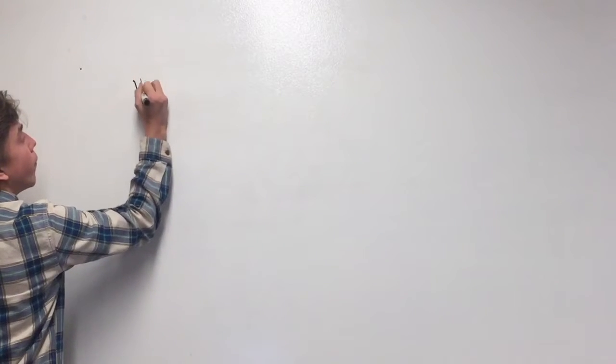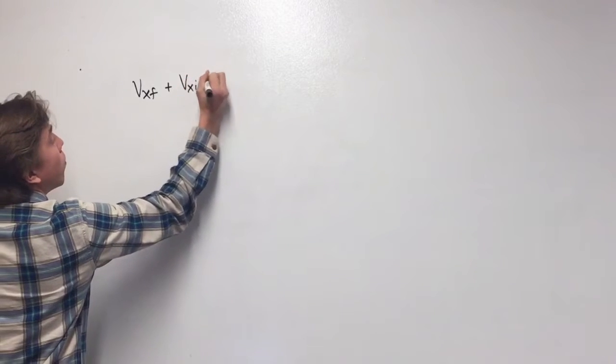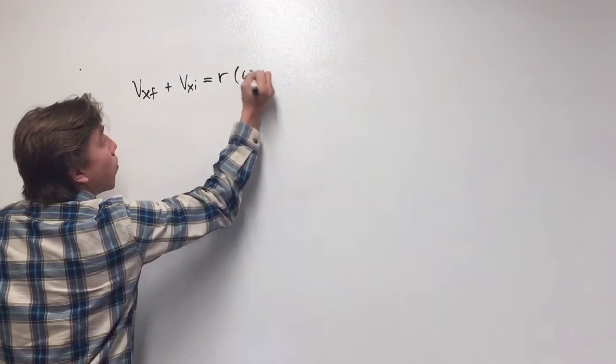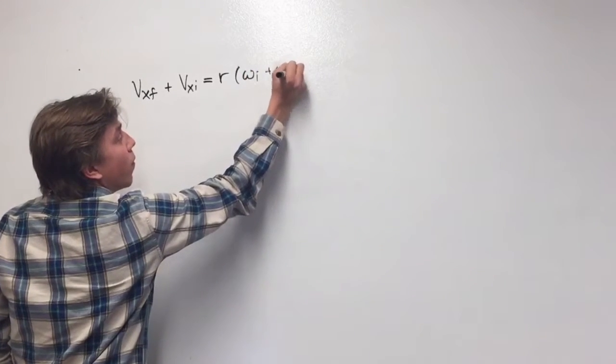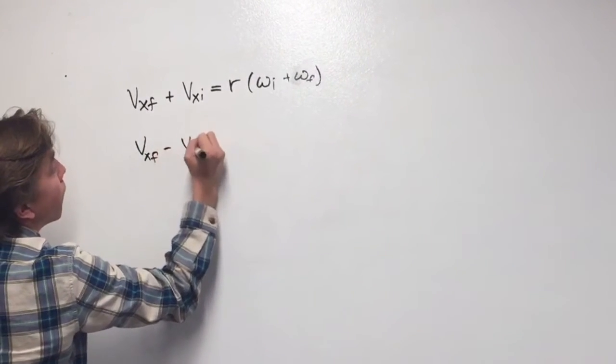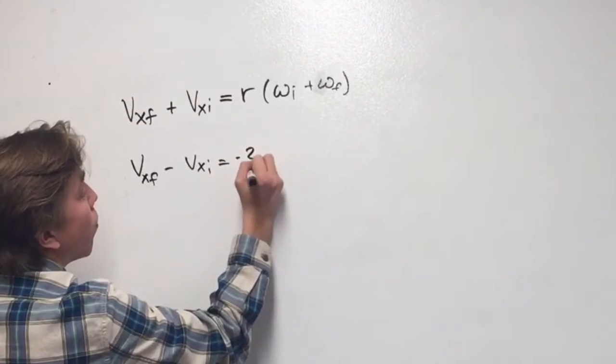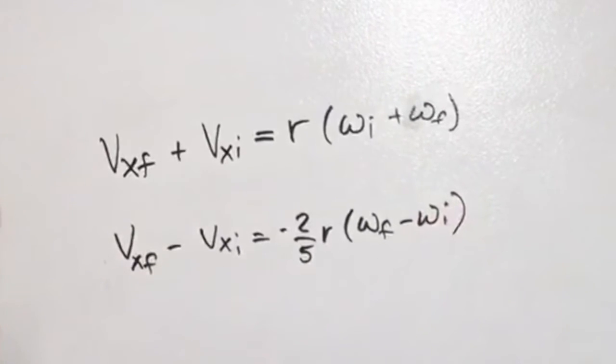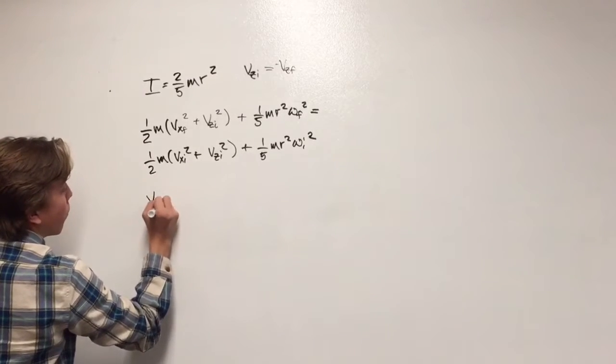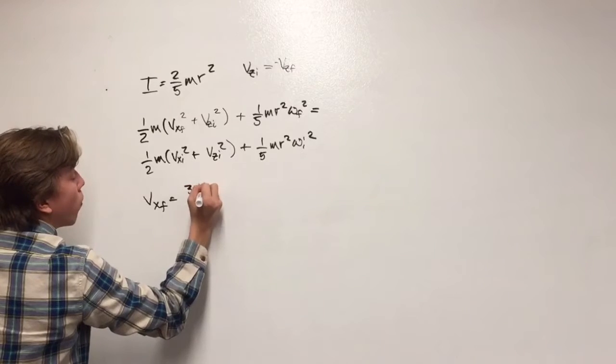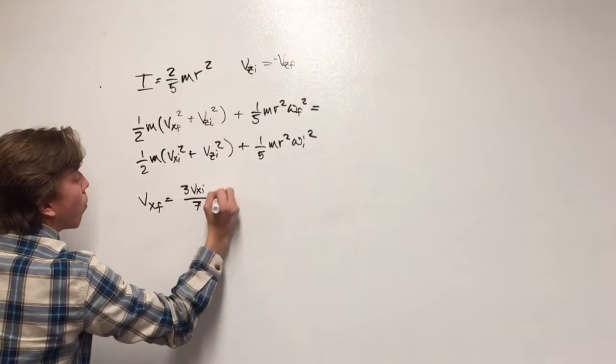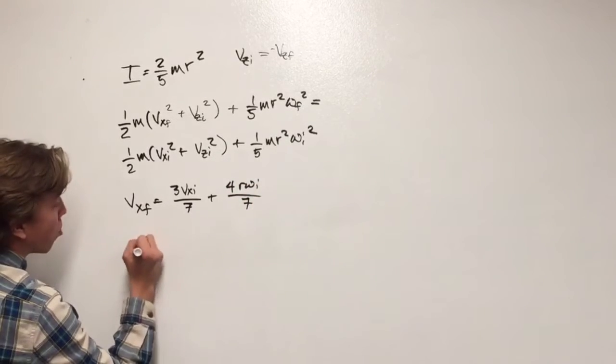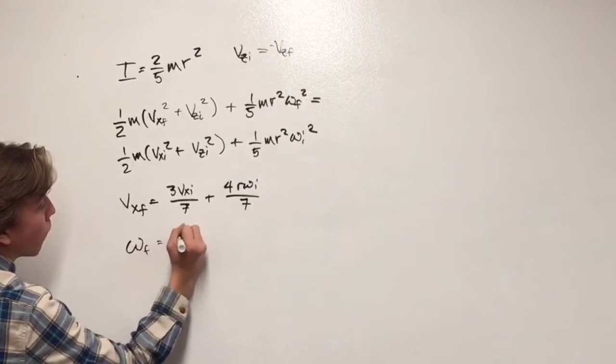First, we have the final vx plus initial vx equals r times the final omega plus the initial omega, where omega is angular velocity. Second, we have final vx minus initial vx equals negative two-fifths r times the final omega minus initial omega. Thus, he found that the vx final equals three-sevenths the initial x velocity plus four-sevenths times r omega initial.